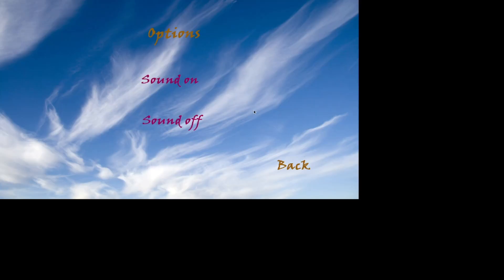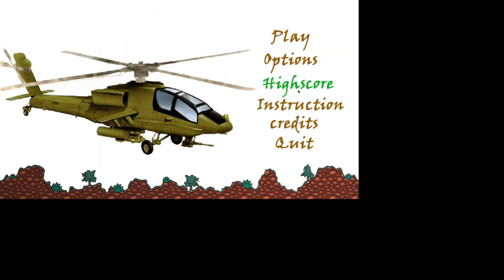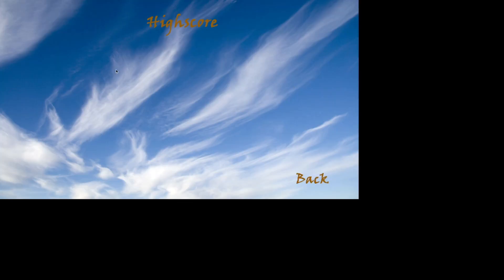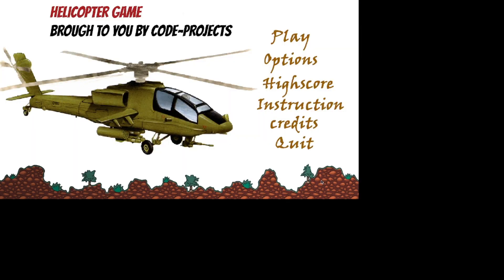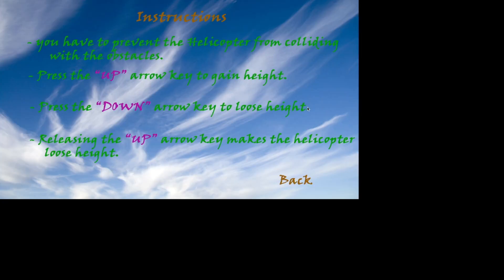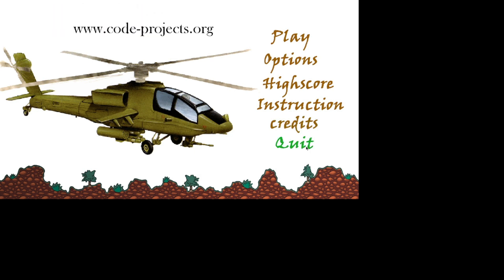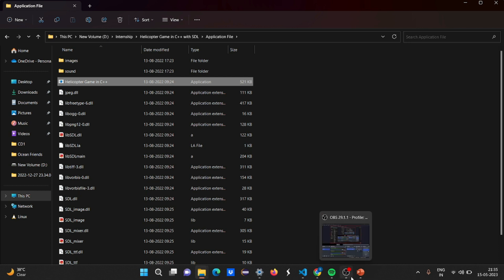You have sound on, sound off, and a back option. In the high score section, no high scores have been made yet. In the instructions section, we have the instructions to play the game: prevent the helicopter from colliding with obstacles, press the up key to gain height, press the down arrow key to lose height, and releasing the up arrow key also makes the helicopter lose height. You can quit using the quit option. I hope you understood the working of this code — for more interesting project ideas, stay tuned to our channel. Thank you.